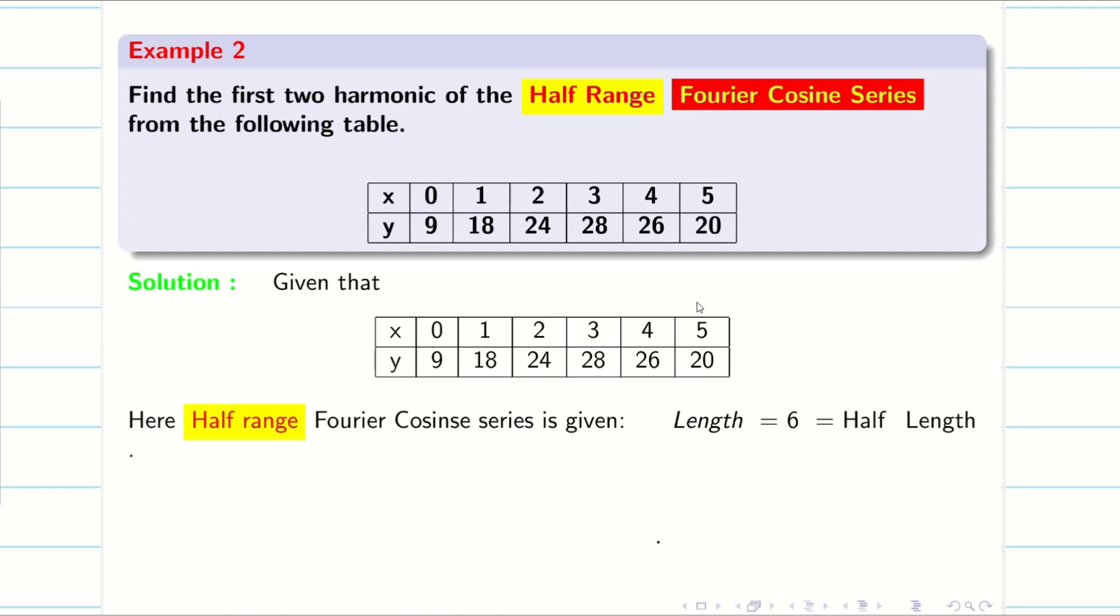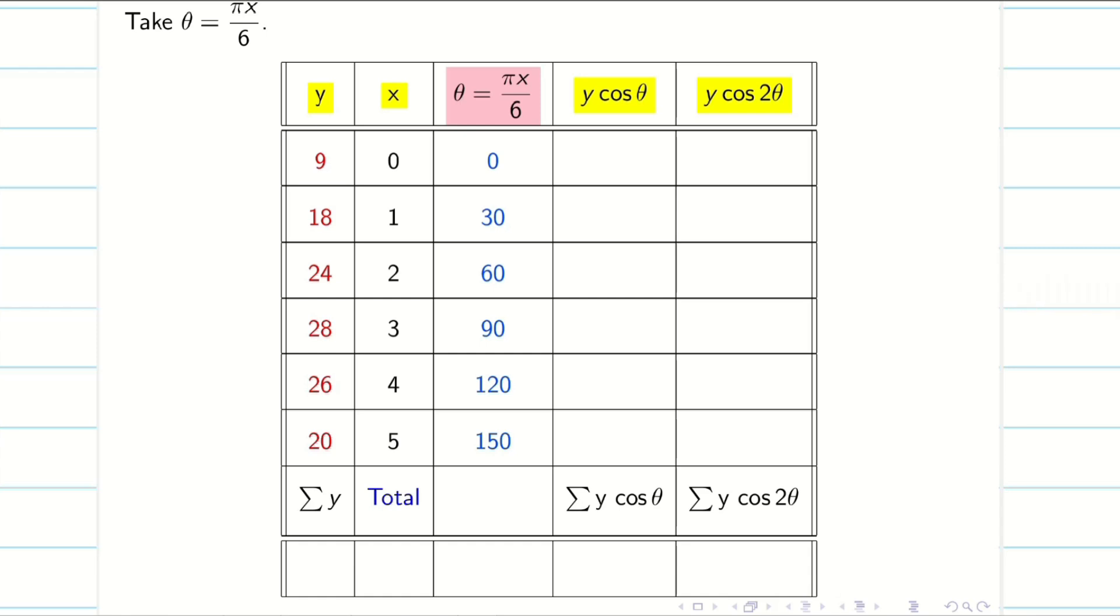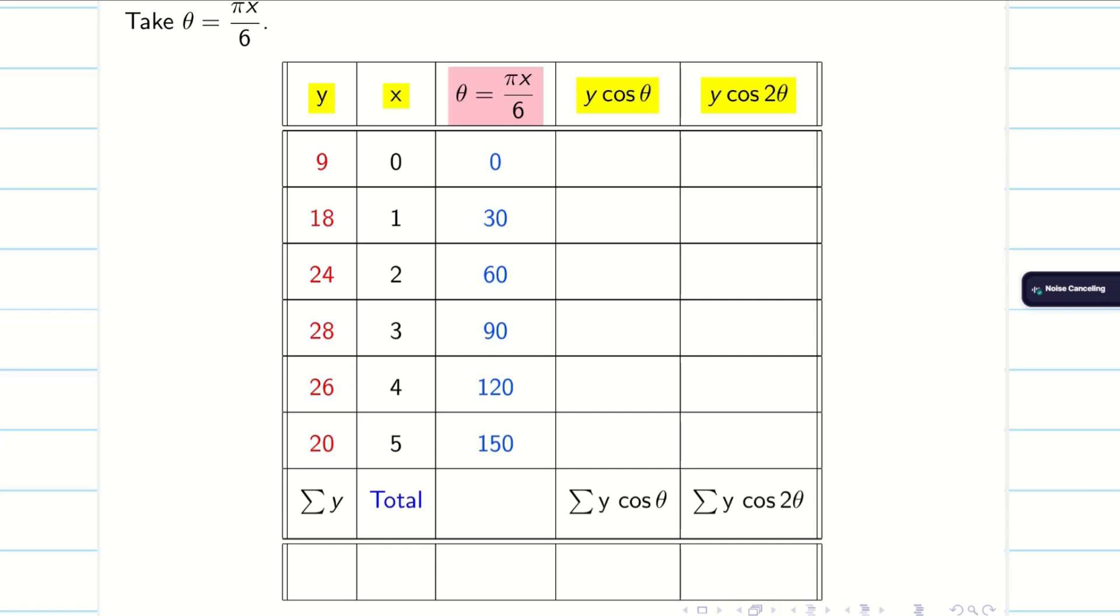Then we can proceed to solve the problem. So, length is equal to 6. That is considered to be my half-length according to the problem. So, I convert the problem into theta form. That is pi x by 6. Now, we have to make the table. As I said the trick, write first y, then x, then theta. Then it is very easy for you to calculate y cos theta, y cos 2 theta. Now, you can take your calculator. Those who don't know the calculator tricks, go to video 1 in the playlist on harmonic analysis. Learn from there and come with your calculator. You can fill the table in a very easy way.